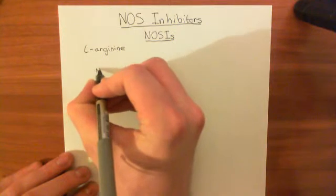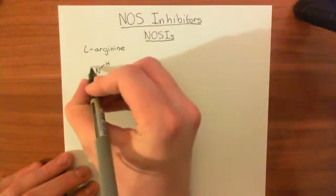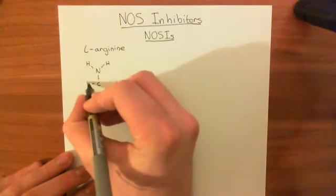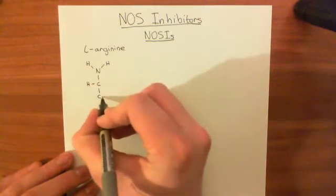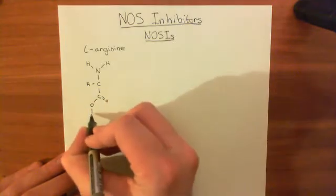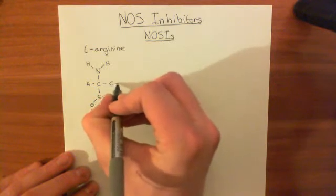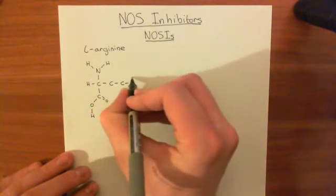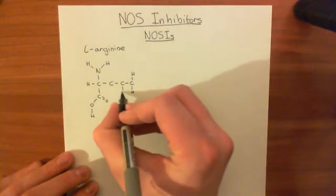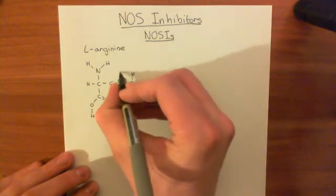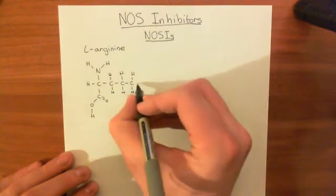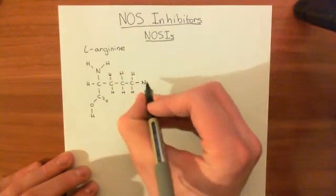Let me draw out the structure of L-arginine, because it is going to be important in understanding how these NOS inhibitors work. Most of the NOS inhibitors that are known are analogues of L-arginine — they have almost identical structures to L-arginine, and the enzyme mistakes them for it. The NOS inhibitor goes into the active site of the enzyme and then blocks that enzyme from functioning.